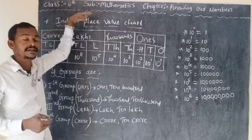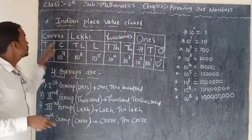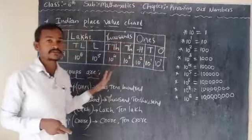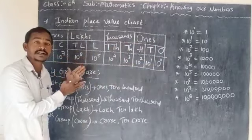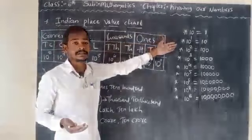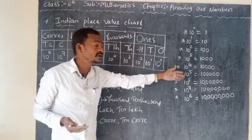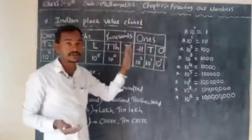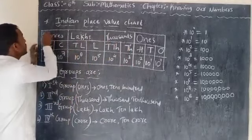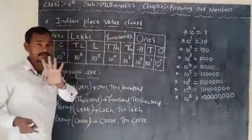Today we will discuss the Indian place value chart. Already written on the board, the Indian place value chart has 4 groups.